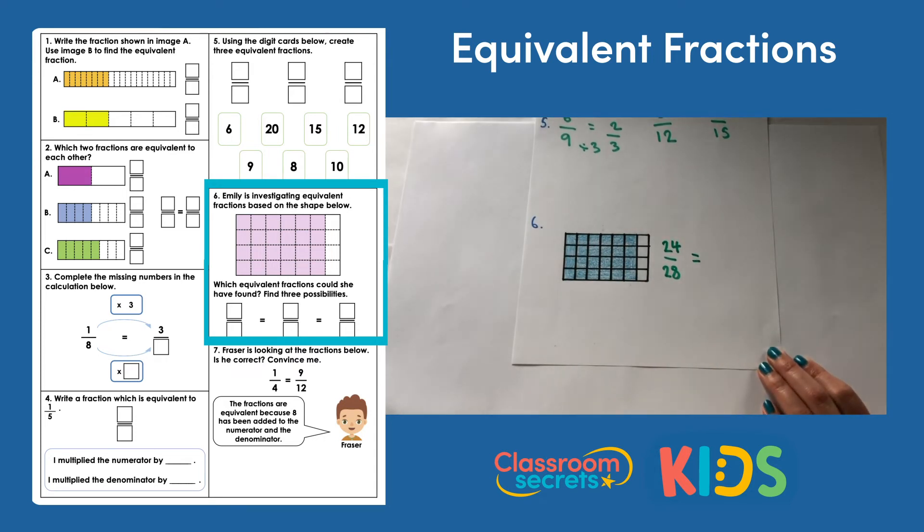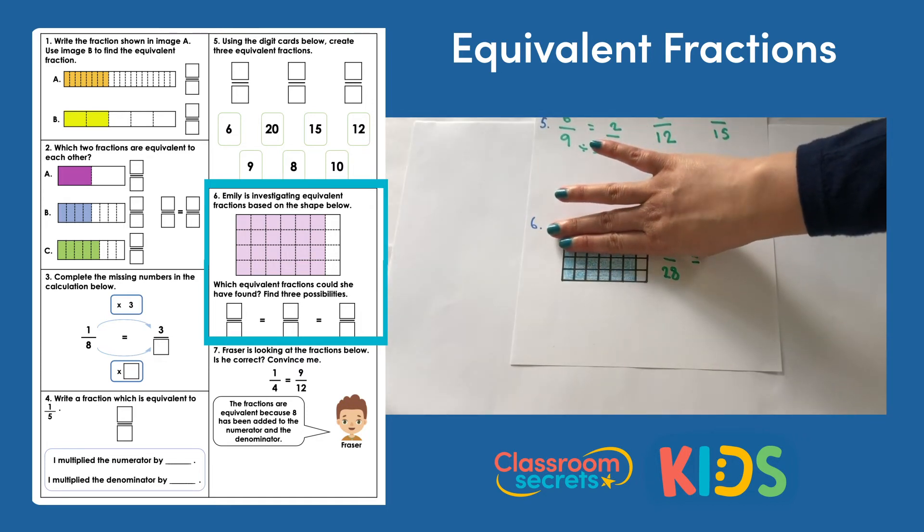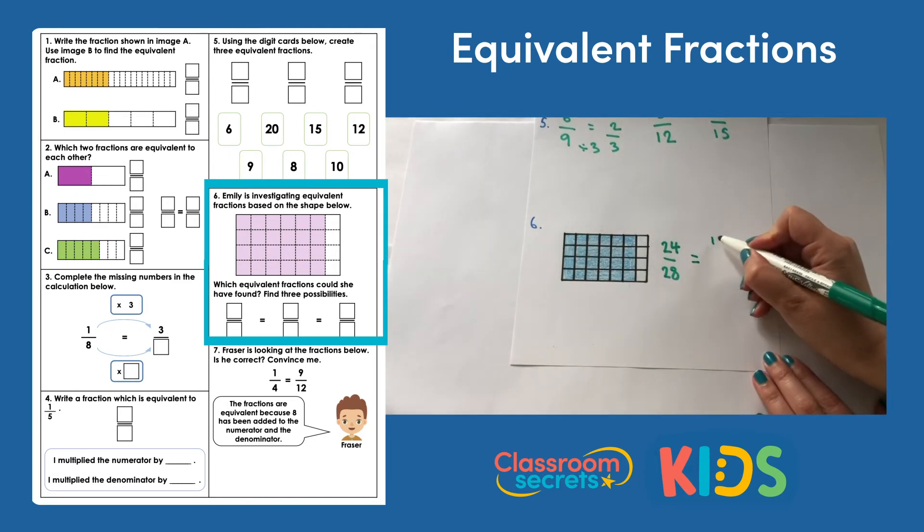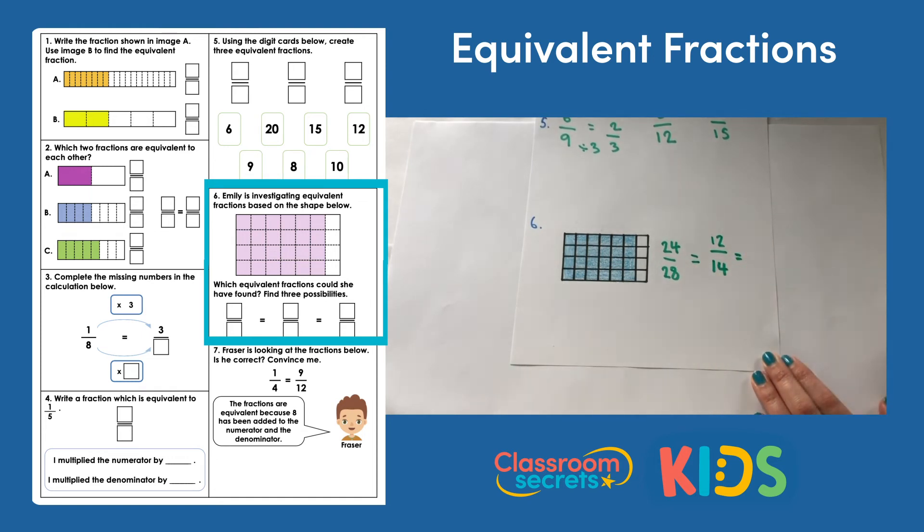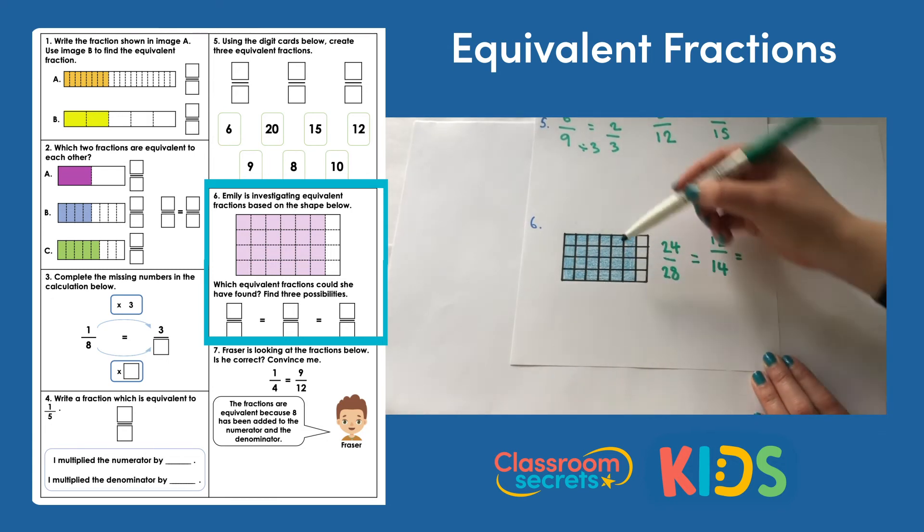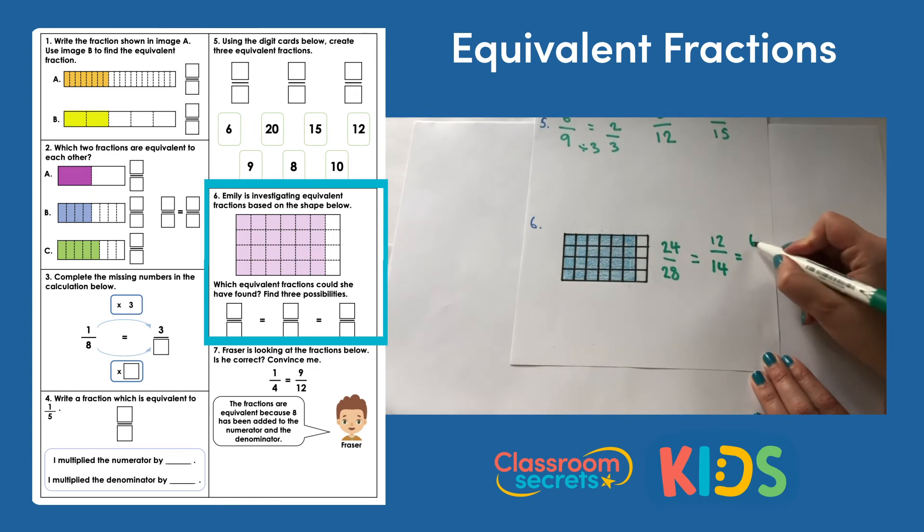I could have a look at an equivalent fraction by just looking at half of that shape. So I could half both numbers. I could divide both of those numbers by 2. And then I would have 12 fourteenths. So they would be equivalent fractions. Something else I could do is divide it again by 2. So I could just have a look at the top row here because each row is exactly the same. They each have 6 out of 7 parts shaded. So that could be 6 sevenths as another fraction.